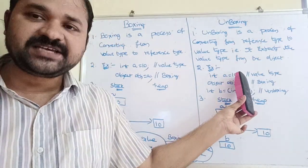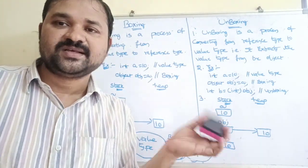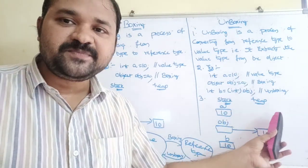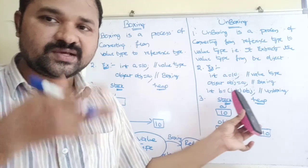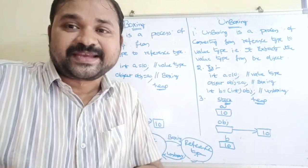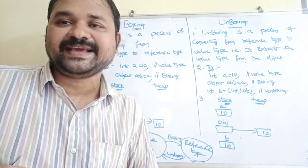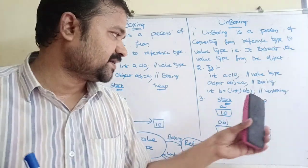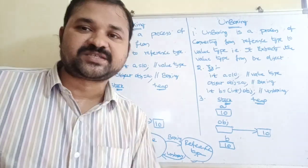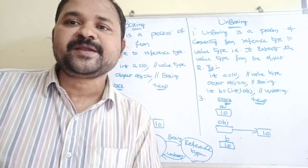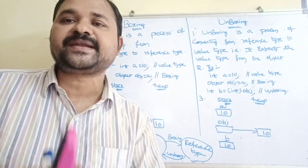int a = 10 is value type. For boxing: object ob = a converts value type to reference type. For unboxing, we convert back to value type: int b = (int)ob — we need explicit type casting here because the data is an integer value stored in object (reference) format. This gives b the value. Note: to implement unboxing, boxing must be implemented first; without boxing, unboxing is not possible.